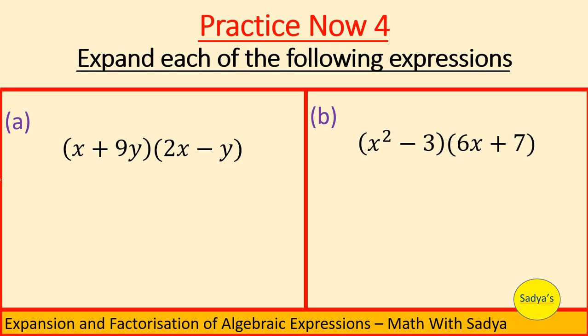For this, an easy way is, take the first term of the first bracket, which here is x, and multiply it with the entire second bracket. So it will be written as x multiplied with 2x minus y. Then take the second term which is plus 9y and multiply it with the entire second bracket, which is 2x minus y.